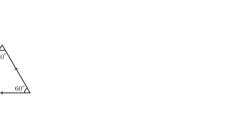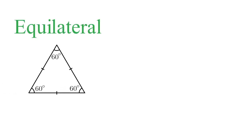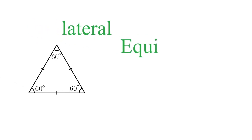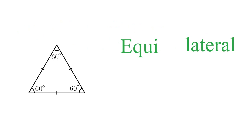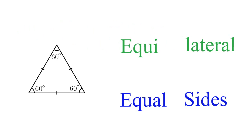The first triangle we have is called an equilateral triangle. What does equilateral mean? It's taken from the Greek words — or could be from the English words — equi and lateral. Equi obviously means equal and lateral means sides. So equilateral means equal sides. An equilateral triangle has all three sides of the same length.